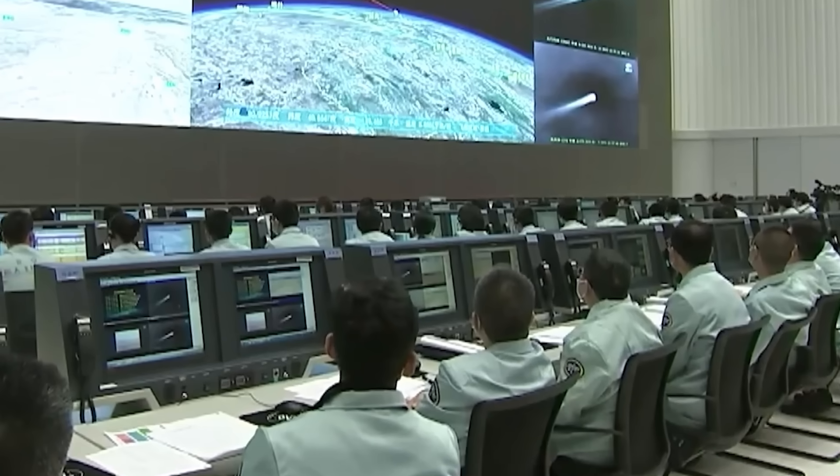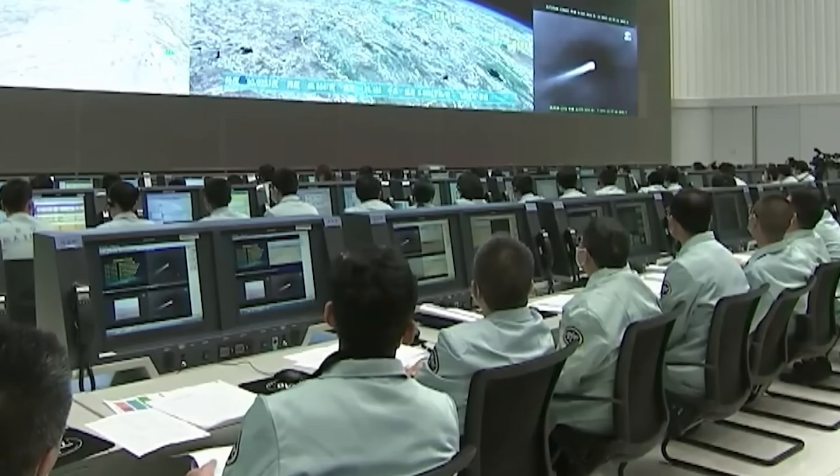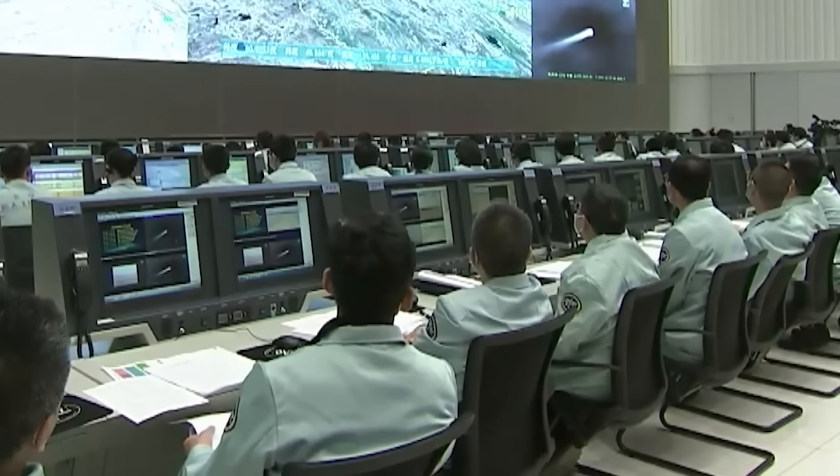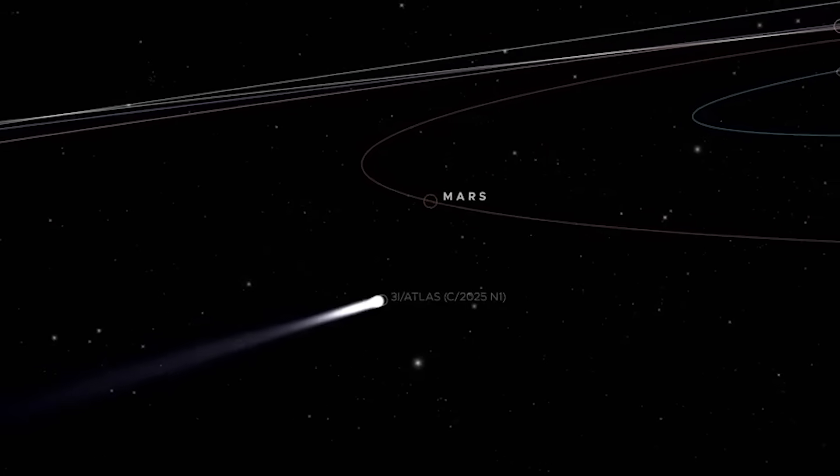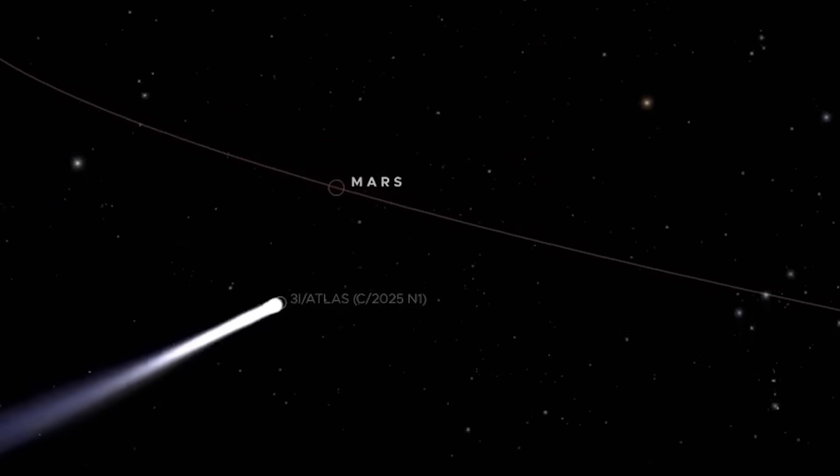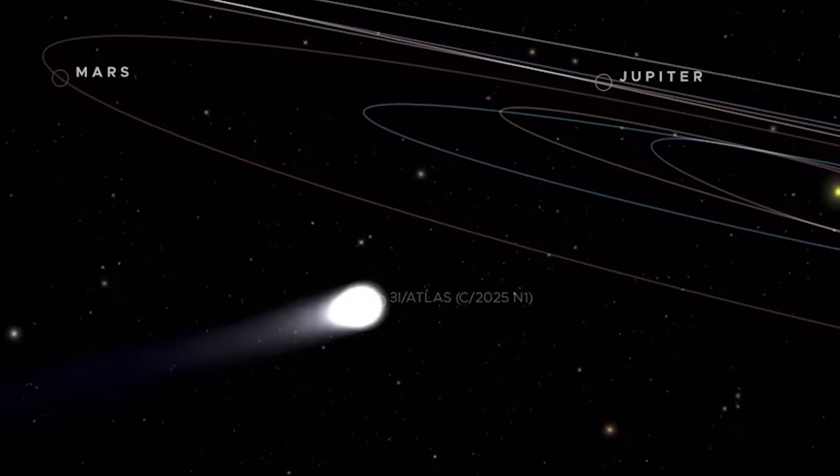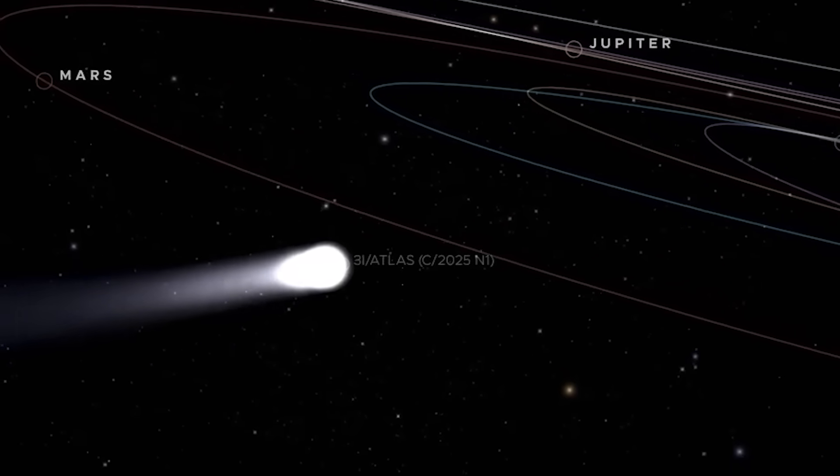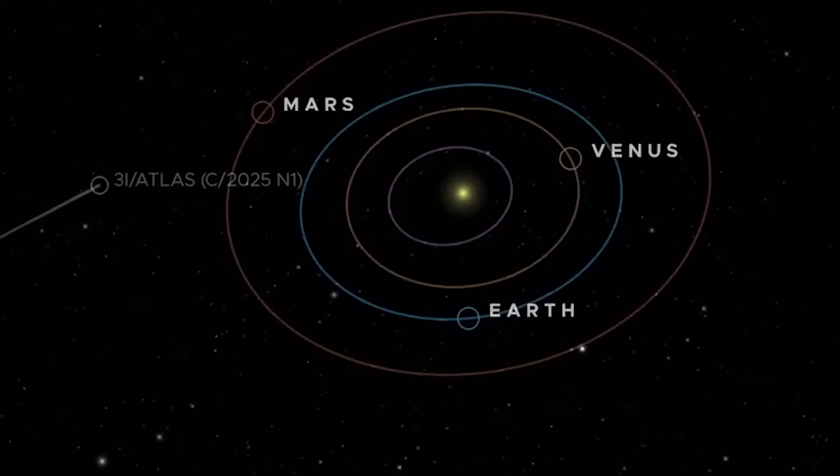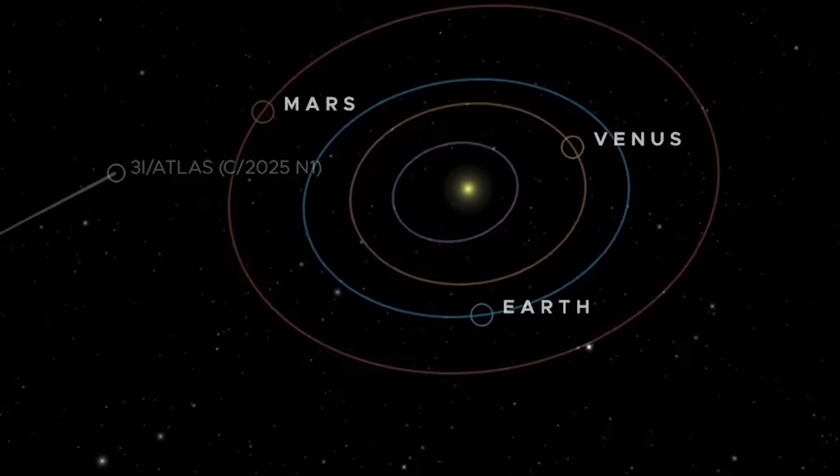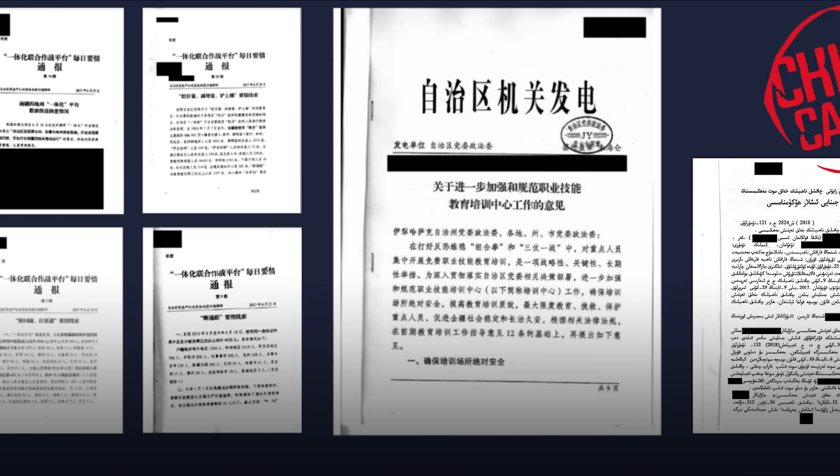It did not present new detections so much as it verified previous analyses. The document confirmed with high confidence that 3i Atlas was an interstellar object characterized by a hyperbolic trajectory and an atypical chemical composition dominated by carbon dioxide. In its carefully translated summaries, one phrase drew particular attention.